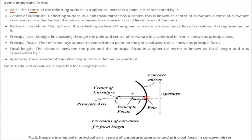What is center of curvature? The reflecting surface in a spherical mirror has a center, and this is known as the center of curvature. For a convex mirror, it lies behind the mirror, but if it is concave, it lies in front of the mirror. This is the center of curvature for this concave mirror.